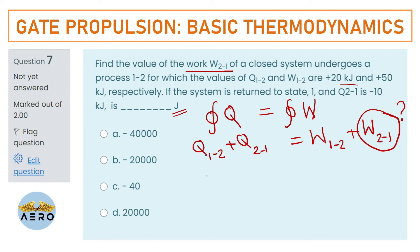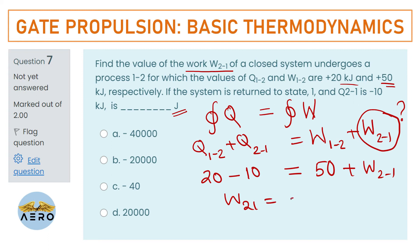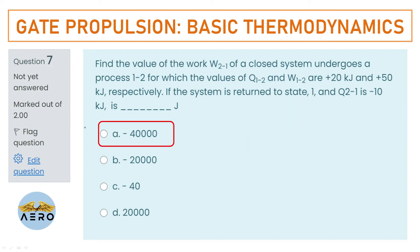Substituting the values: 20 + (−10) = 50 + W₂₁, so W₂₁ = 10 − 50 = −40 kJ. They have asked the answer in joules, so that is −40 × 10³ J. The right option is option A.